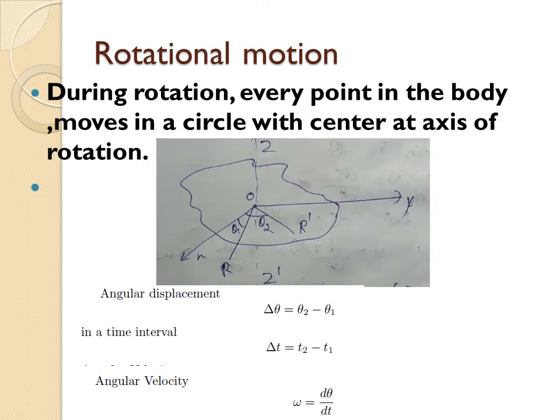Rotational motion is the motion of every point of the body with respect to an axis of rotation. When a rigid body rotates about an axis, every point moves in a circular path centered at the axis of rotation. If you track the position of one point at different intervals of time, you can see that point is making circular motion each time it rotates.